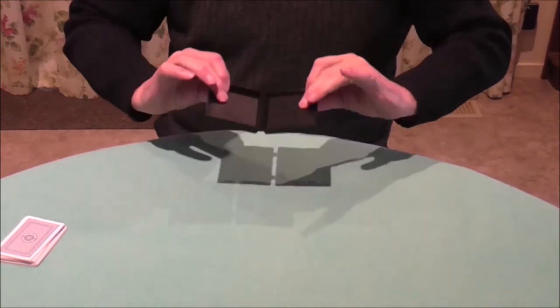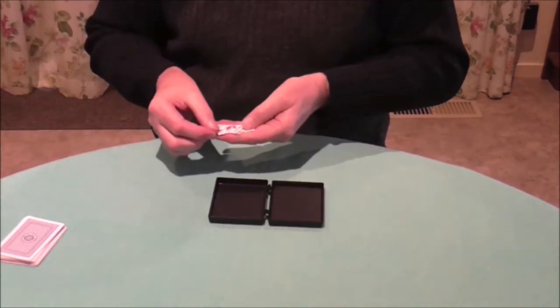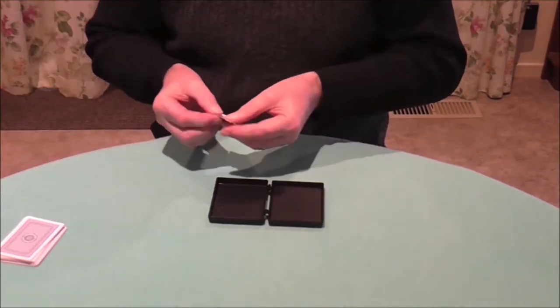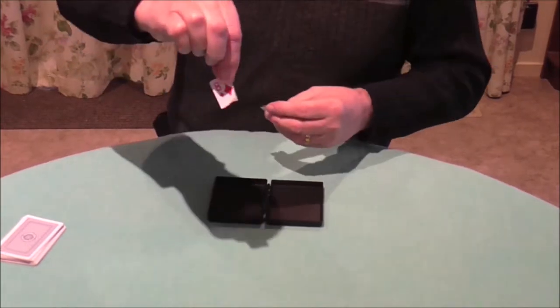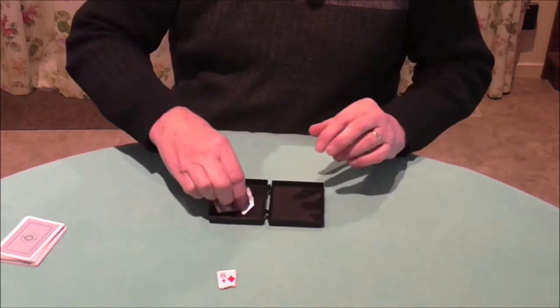So I've got a box here, it's called the restore box, but it does other things apart from restore things. Just before I do anything else, I'll take one of the corners, there we are, it's the eight of diamonds. So we can remember the card that we were talking about.